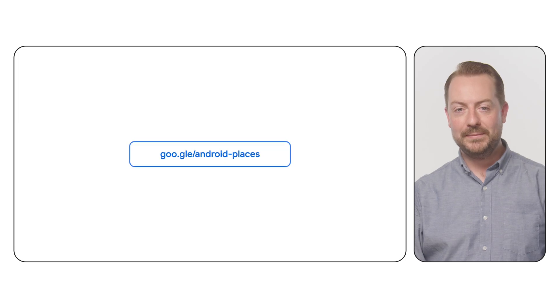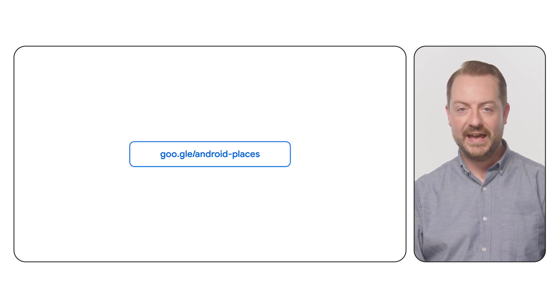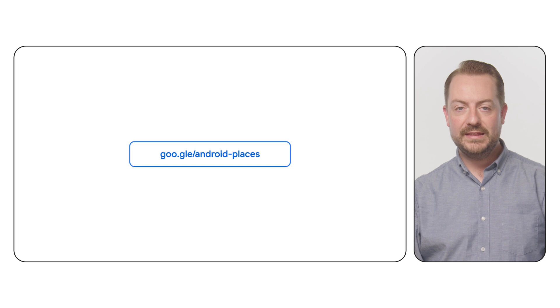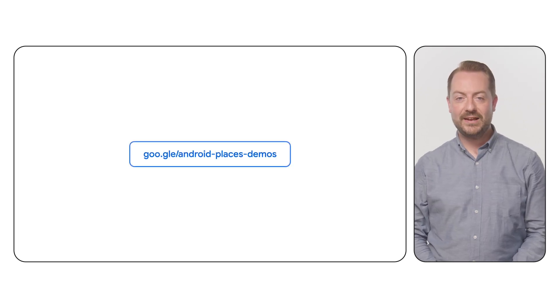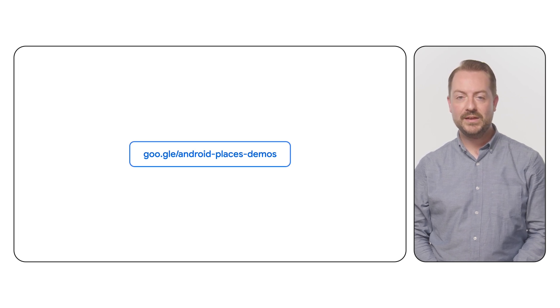While the base SDK is written in Java, if you're a Kotlin user, we have you covered. On the Google Maps GitHub, there is an extension library for Kotlin with extension functions that sit on top of the SDK. Follow the link in the description to check it out. Also, be sure to take a look at the code and demos available on the Google Maps Samples GitHub page for more tips and tricks in using the SDK.